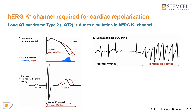Figure A shows the ventricular action potential, which begins with a rapid upstroke or depolarization phase, followed by a slow repolarization phase. The HERG potassium current is an outward current, shown in blue. When there is a mutation in the HERG channel, the outward HERG current can be reduced, shown in red. The reduction in the HERG current results in a prolongation of the ventricular action potential.